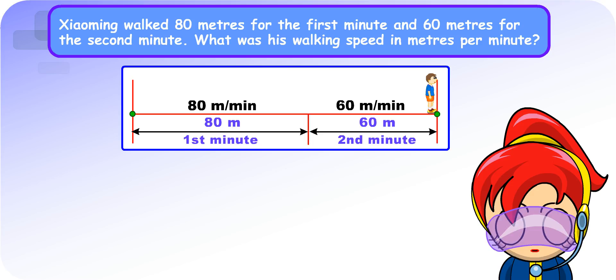Both of them are correct. They are Xiaoming's walking speed at different times. To make it clear, I will need you to calculate his average speed. Average speed? What is it? It is the average distance travelled per unit time. We have a formula for it. That is, average speed equals total distance divided by total time.